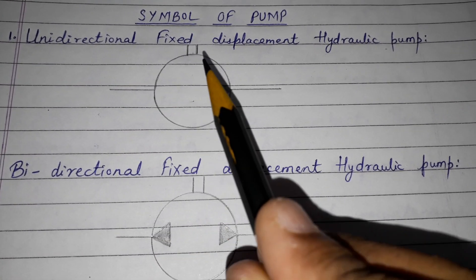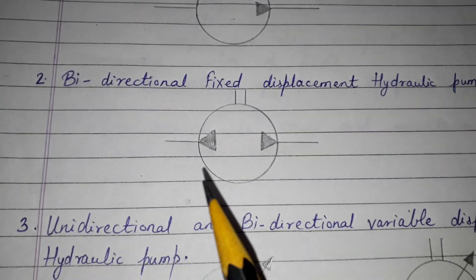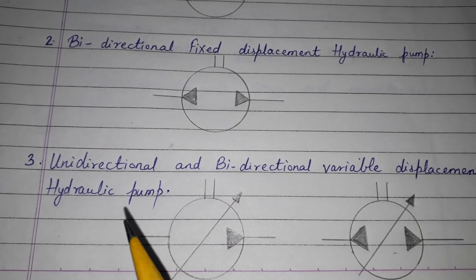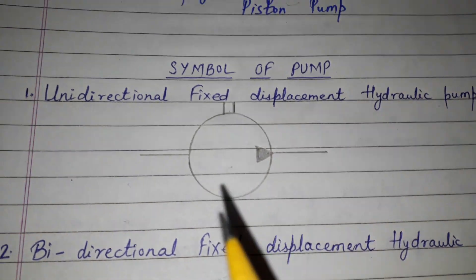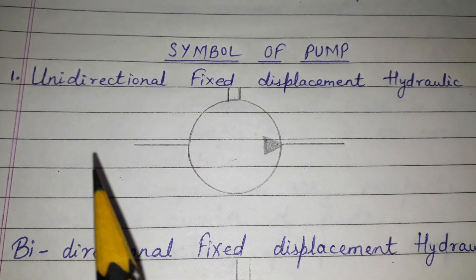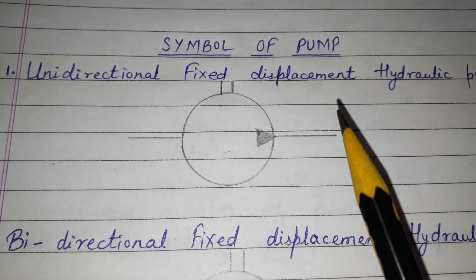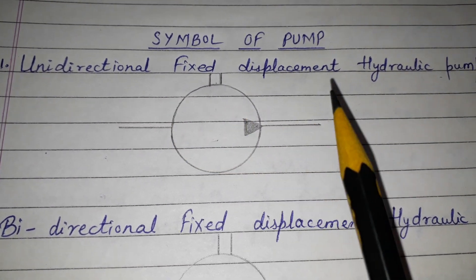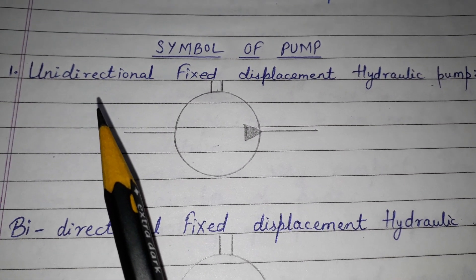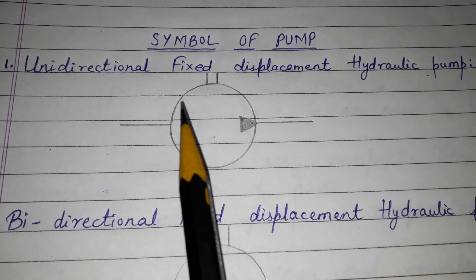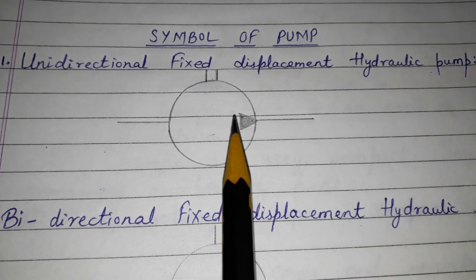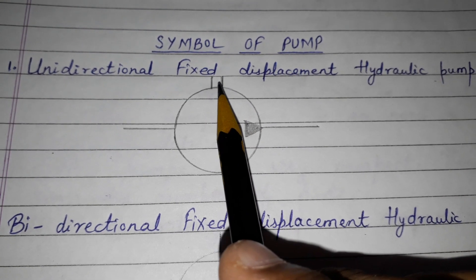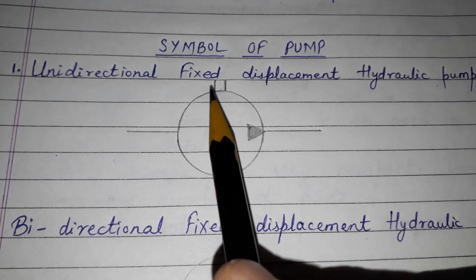The first is the unidirectional fixed displacement hydraulic pump. Unidirectional means the flow is in one direction, and fixed displacement means the discharge is fixed. This is the symbol — the triangle is filled, which shows it is a hydraulic pump, and here the shaft indicates that the pump is driven by external means.